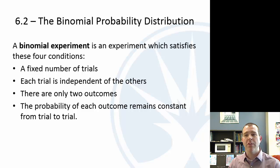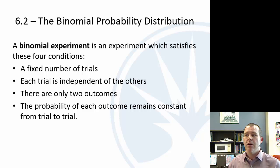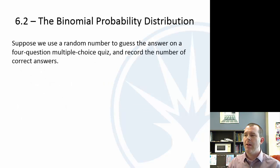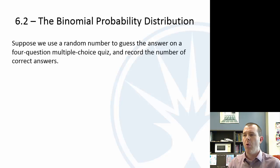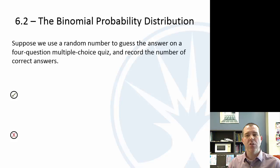Next we want to come up with a formula to calculate these probabilities. Let's look at an example: guessing on a three-question multiple choice quiz where each question has four choices, and we count the number of correct answers. For the first question, there are two possibilities: right or wrong.